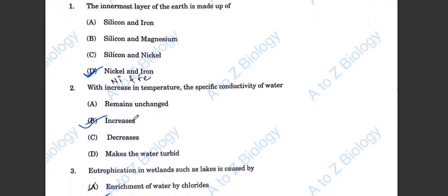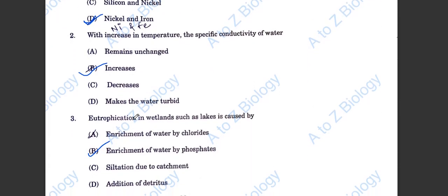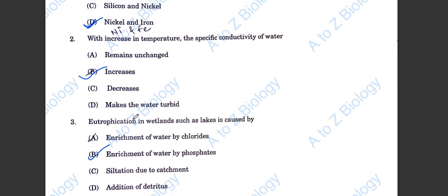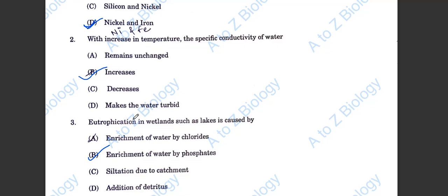Question number 1. The innermost layer of the earth is made up of nickel and iron, option D. Question number 2. With increase in temperature, the specific conductivity of water increases. Question number 3. Eutrophication in wetlands such as lakes is caused by enrichment of water by phosphates.